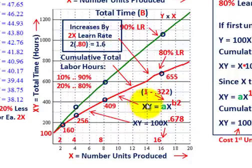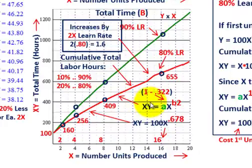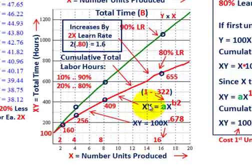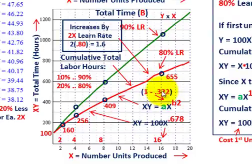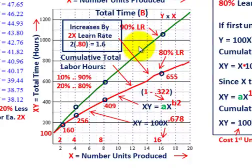We went through a lot here to come up with our generalized formula to determine total time in hours based on number of units produced. We first determined average time per unit, then multiplied by the number of units to get cumulative total time. That summarizes our discussion on the learning and experience curve and the cumulative average model, also known as the Wright's rates model.